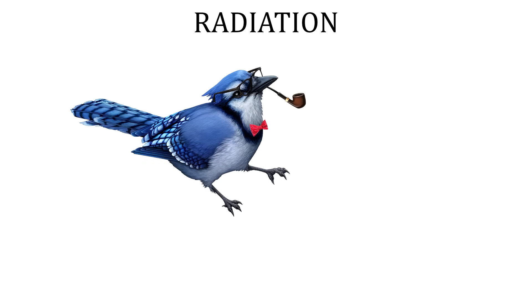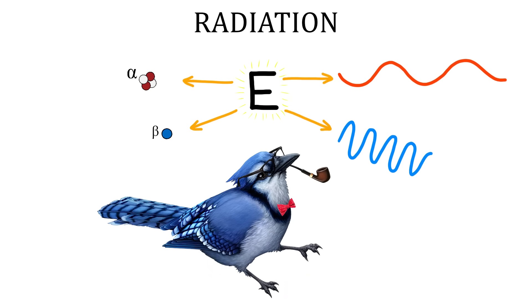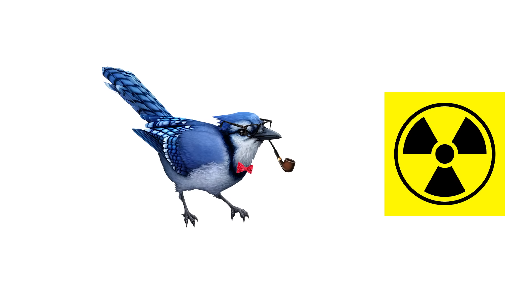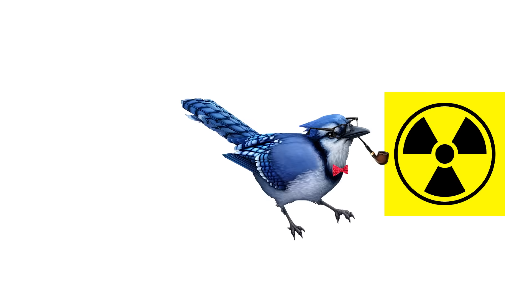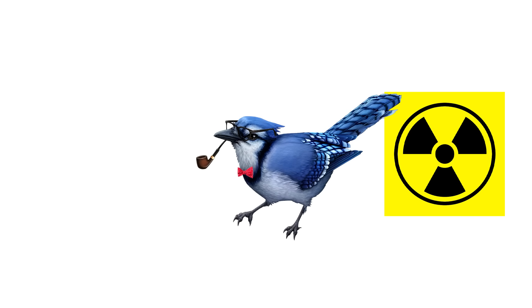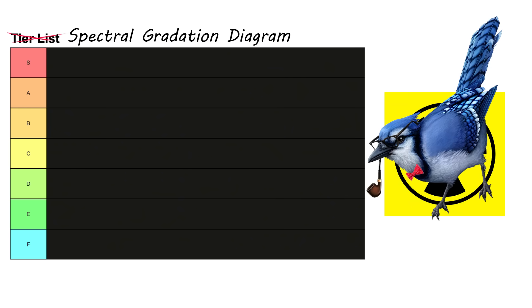Radiation is actually very common and around you all the time. Put simply, radiation is the transmission of energy in the form of particles or waves through space or material mediums, and they come in many different varieties. So today, we're going to break down the different types of radiation and scientifically rank them from most to least dangerous by placing them on what scientists call a spectral gradation diagrammator.